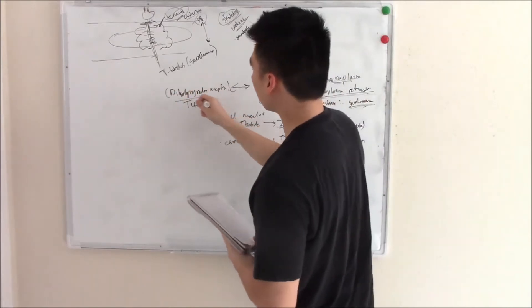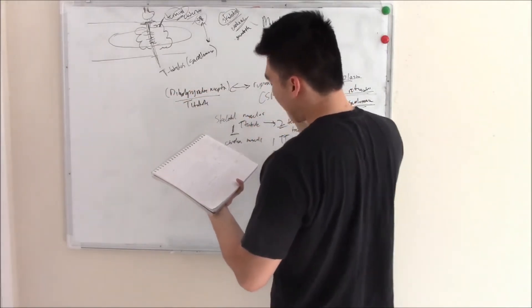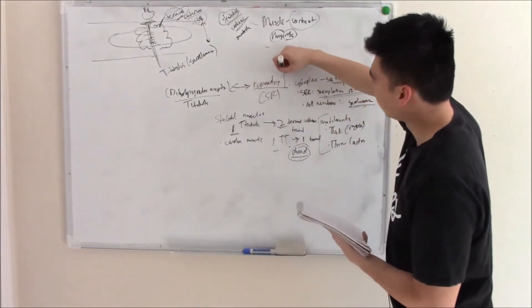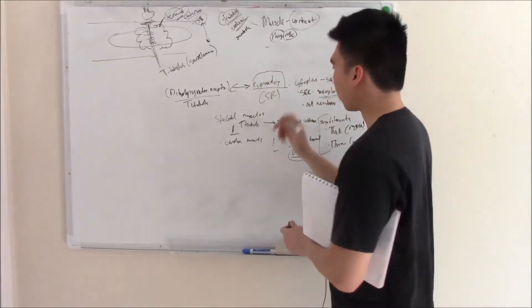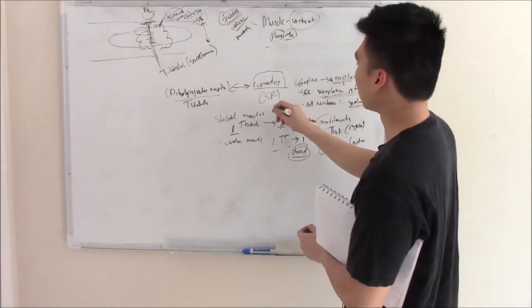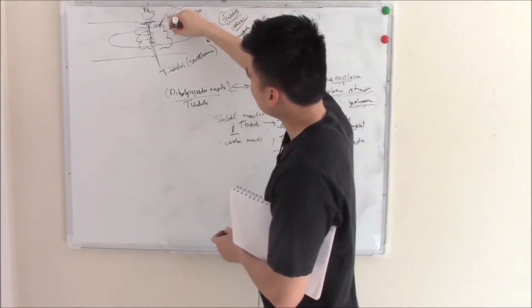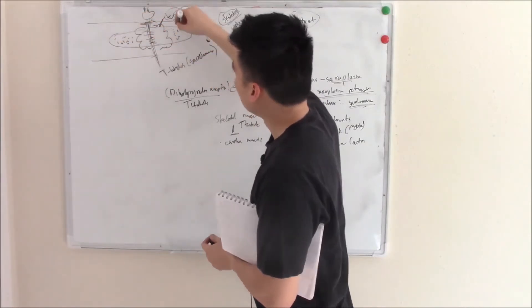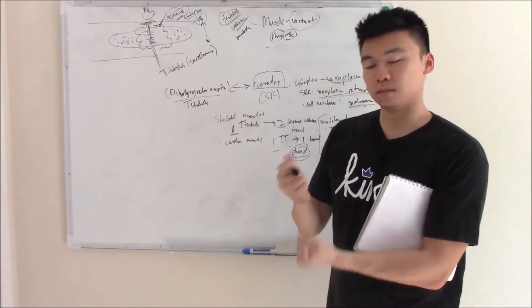The dihydropyridine receptors communicate with the ryanodine receptors of your sarcoplasmic reticulum. When it gets that signal, the sarcoplasmic reticulum undergoes a conformational change and releases a ton of calcium into those long contracting cords, and you have contraction.